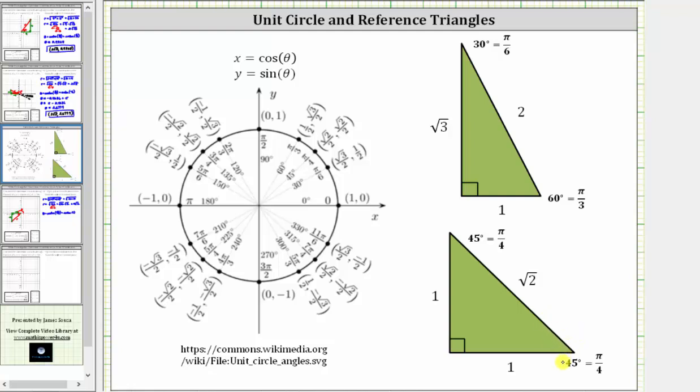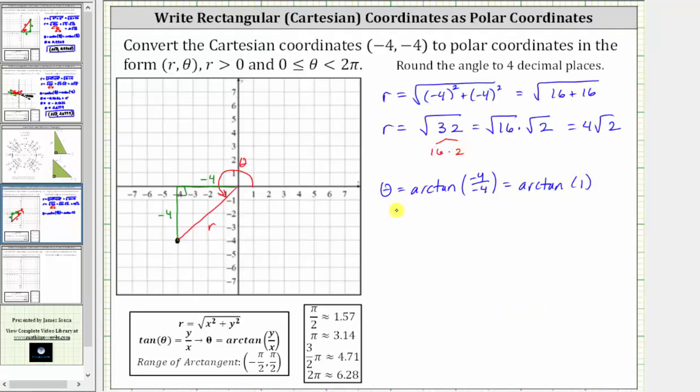where tangent 45 degrees, or pi over four radians, is equal to one. So if we recognize that, we know the calculator is going to give us pi over four radians.